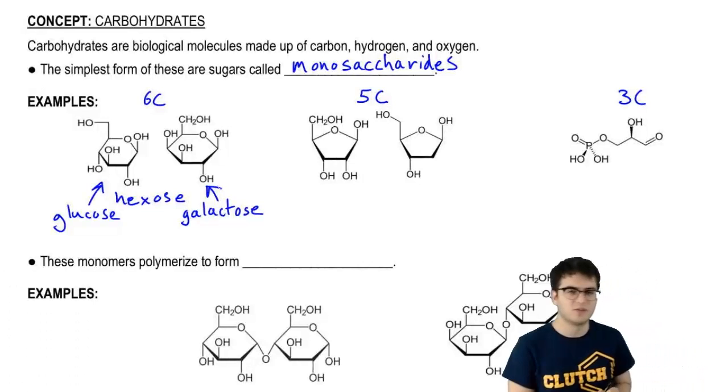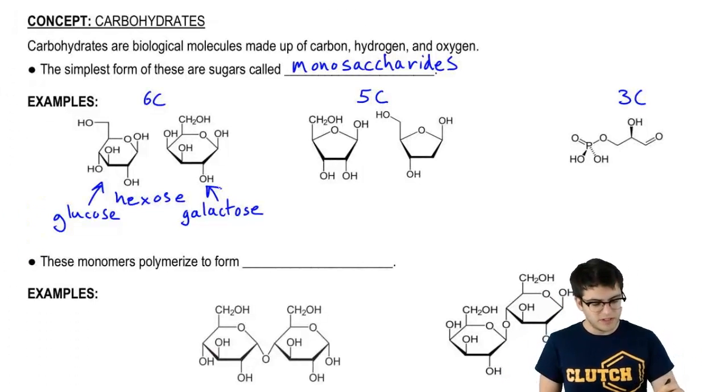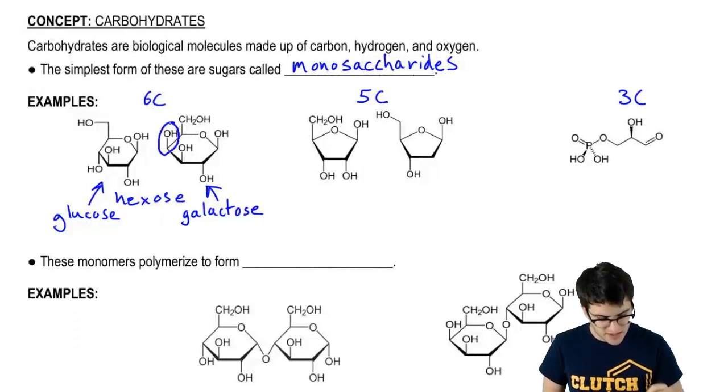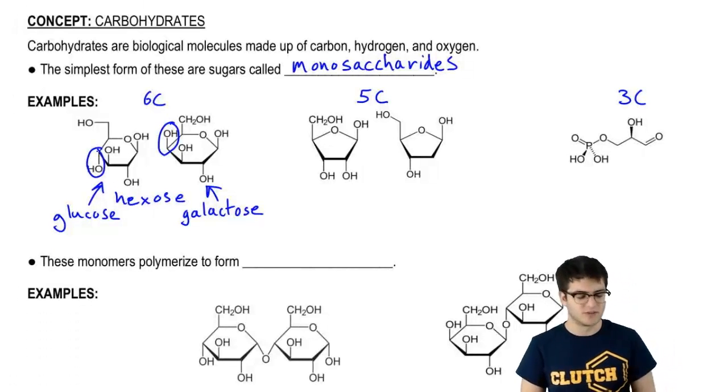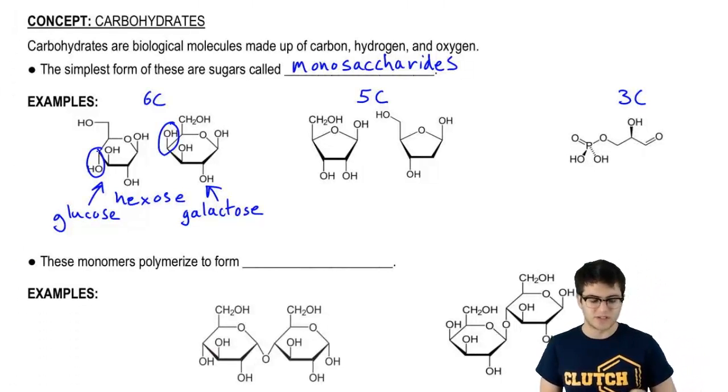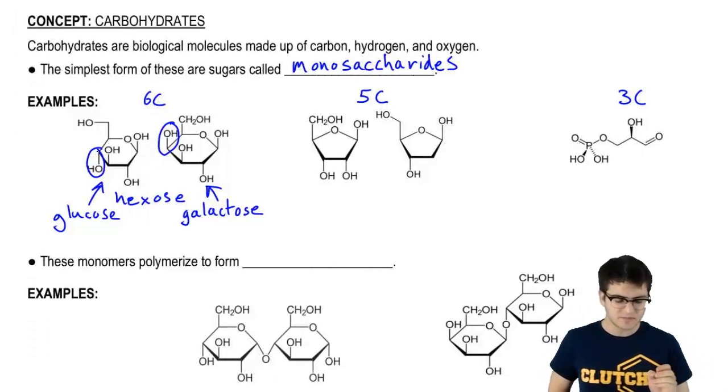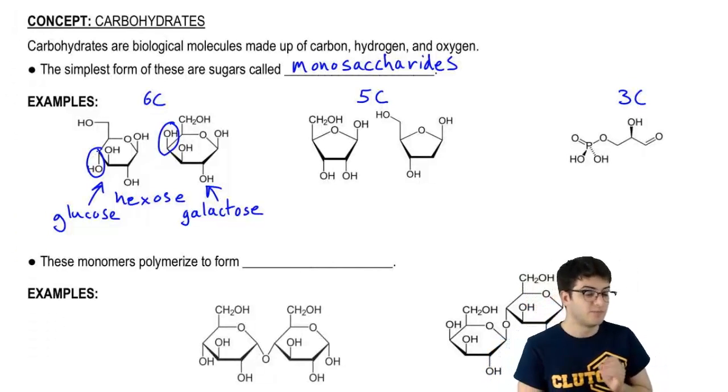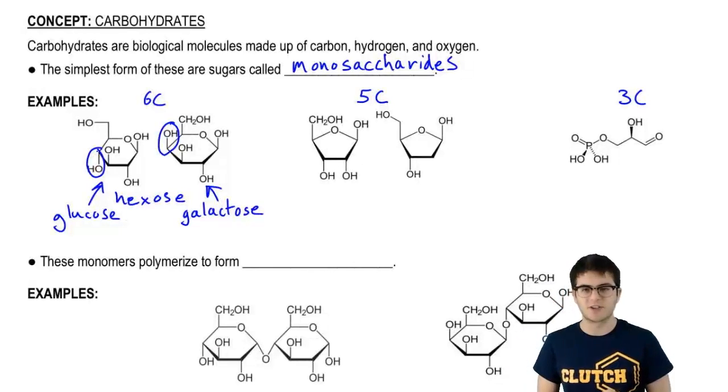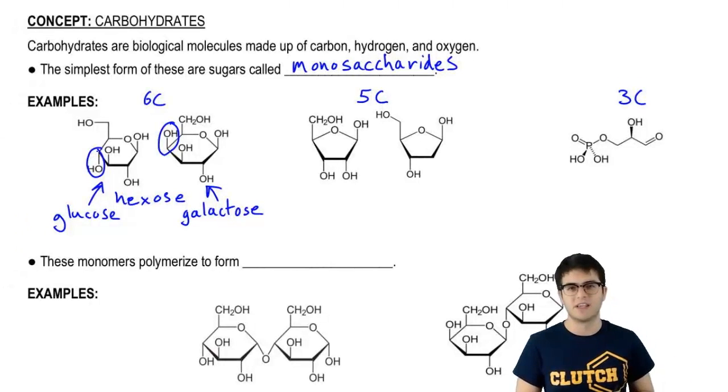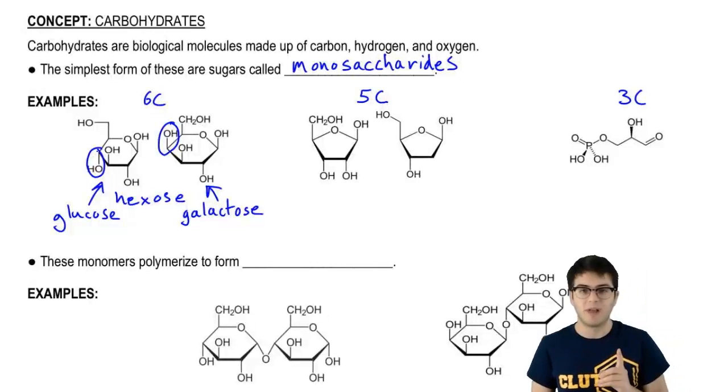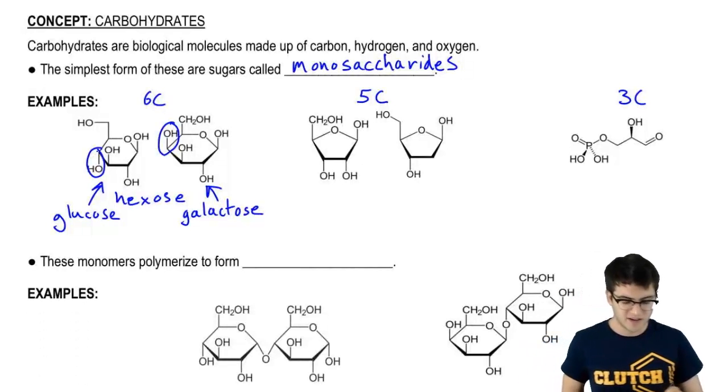These two molecules might look pretty similar to you. The only real difference is this alcohol or hydroxyl group right here. In glucose, it's below the ring in this image, and in galactose, it's above the ring. This might seem like a minor difference, but remember what we were talking about in an earlier video: even a small difference in structure can result in a big difference in chemical properties.